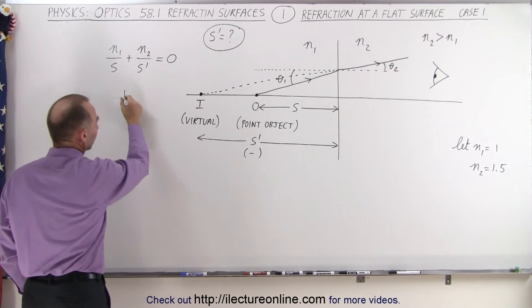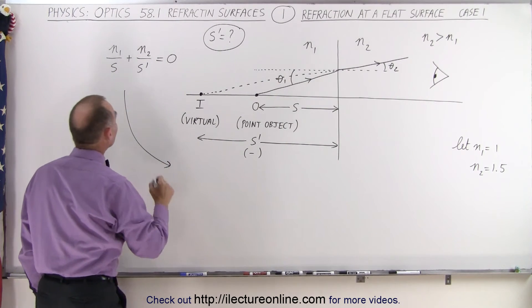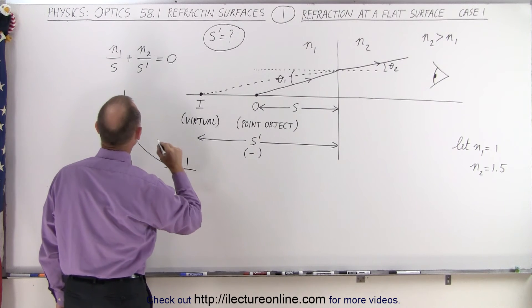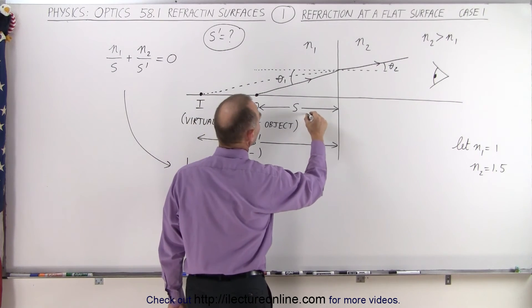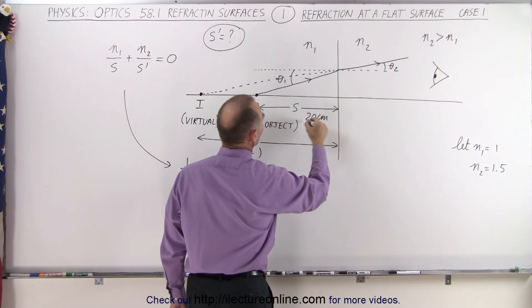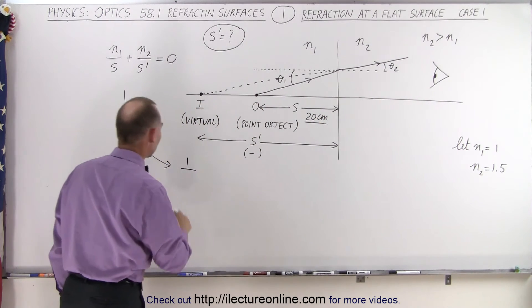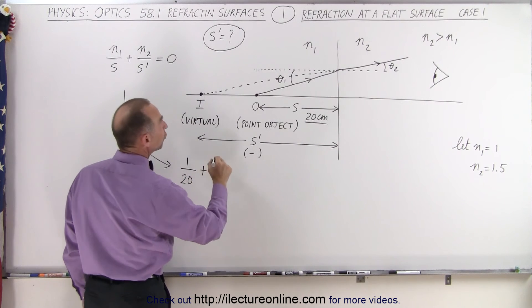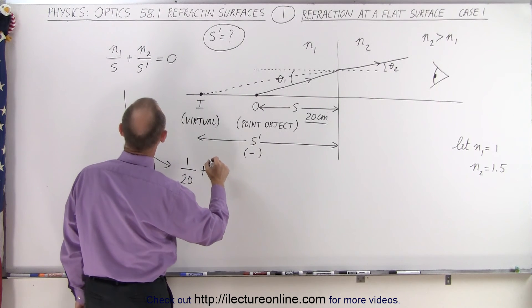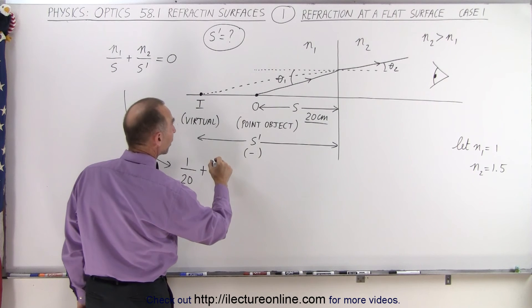Now let's try that and see if that's indeed the case. So using this equation we can see that n1, which is 1 over s, well we need the distance for s. Let's make s 20 centimeters just to have a value for that. So if s is 20 centimeters, we get 1 over 20 plus n2, which is 1.5, divided by s prime, which is equal to 0.